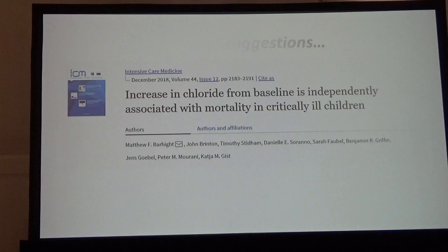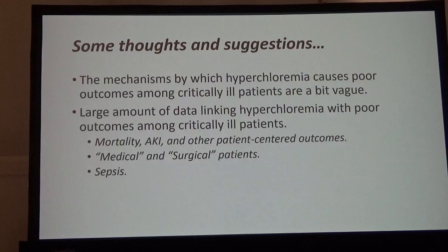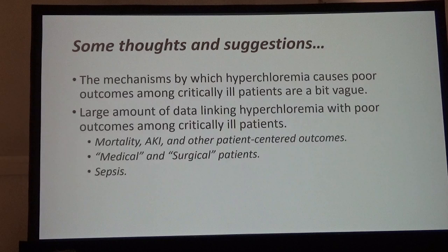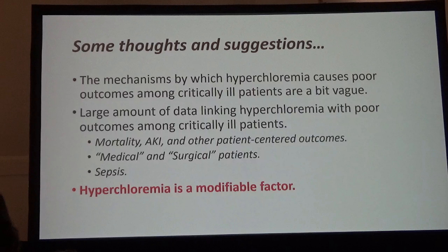Some thoughts and suggestions. The mechanisms by which hyperchloremia causes poor outcomes are, in my mind, a bit vague — a constellation of problems without one unifying mechanism. There is a large amount of data linking hyperchloremia with poor outcomes in critically ill patients, whether you look at mortality, AKI, or other patient-centered outcomes — in both medical and surgical patients, in sepsis, and now in both kids and adults. Importantly, from a pragmatic standpoint, this is a modifiable factor that we can potentially control.